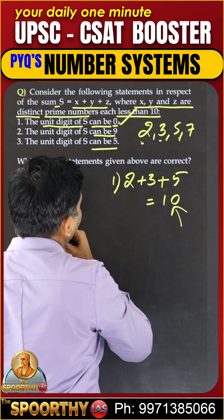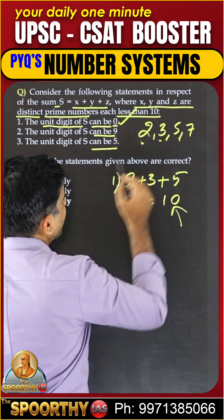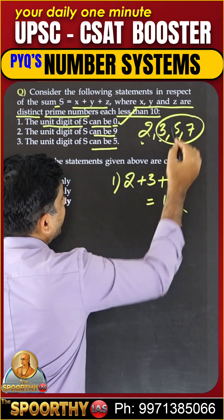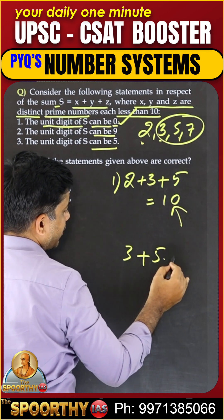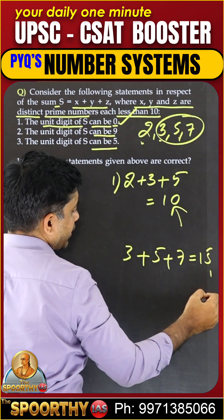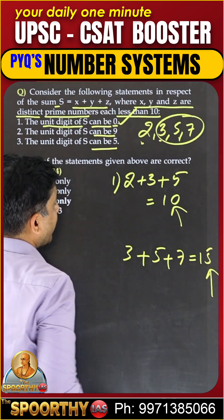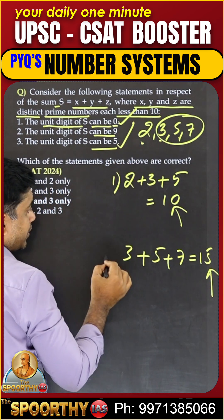Let us try some more cases. If we take 3, 5, 7 — then 3 plus 5 plus 7 equals 15. Yes, ending with 5, so the third statement is also correct.